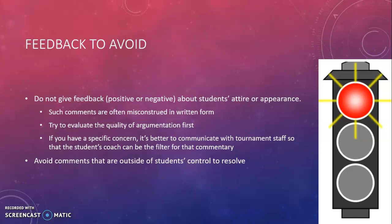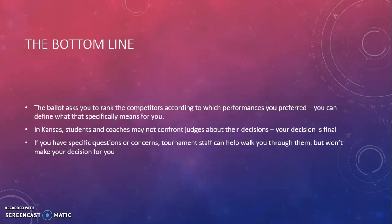You should also generally avoid comments that are outside of a student's control to resolve. If you are giving students an opportunity to improve, ask yourself: is this something I can reasonably expect that the student could improve? Is this something that they could change, or is it something that they couldn't really control? It's important that you know judges do not have any requirements for prior qualifications or any pre-knowledge of the events. By watching this video you are already in the upper half of judges as far as the knowledge that you're going to bring to the round. The ballot just asks you to rank the competitors according to which performances you preferred — you define what that means. Students and coaches should not be coming to you to confront you after the round. Your decision is final, and Kansas has strict rules prohibiting students and coaches from confronting you about the decisions that you made.